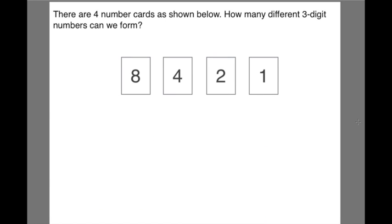Now let's look at the second question. I read the question to you. There are 4 number cards as shown below. Same number, 8421. How many 3 digit numbers can we form from these 4 number cards? Now for 3 digit numbers, it's going to get a little bit complicated. So I'm going to slow down my pace. I'm just going to explain to you.